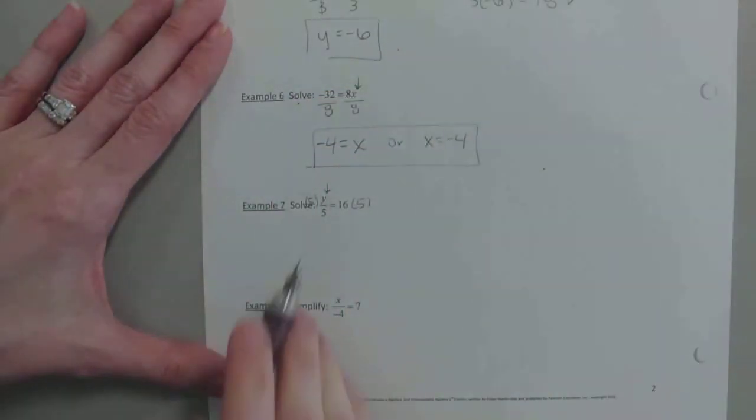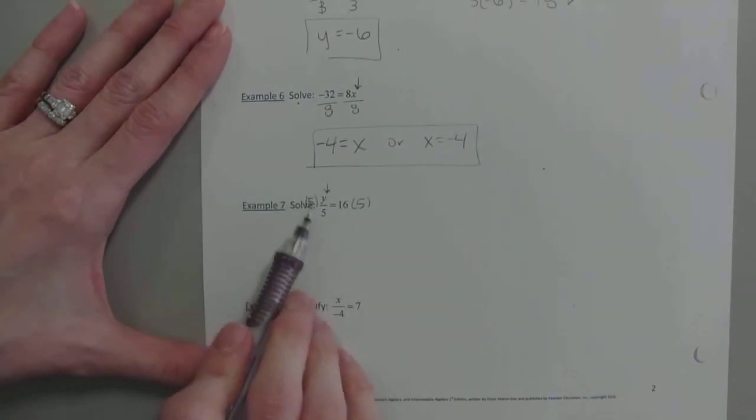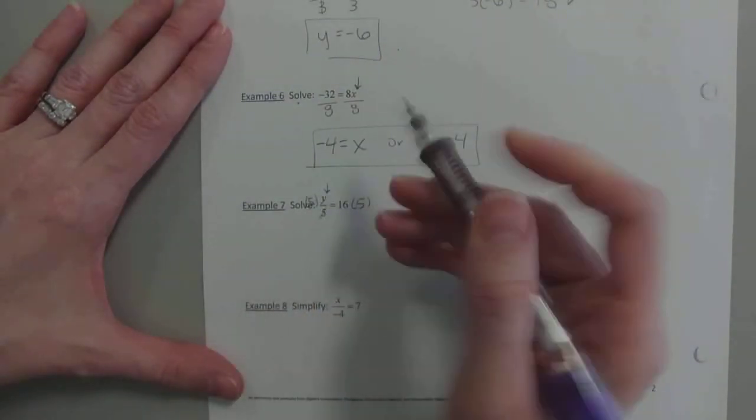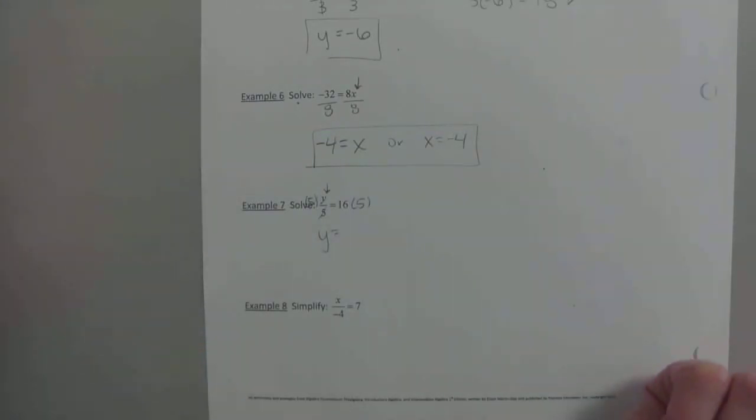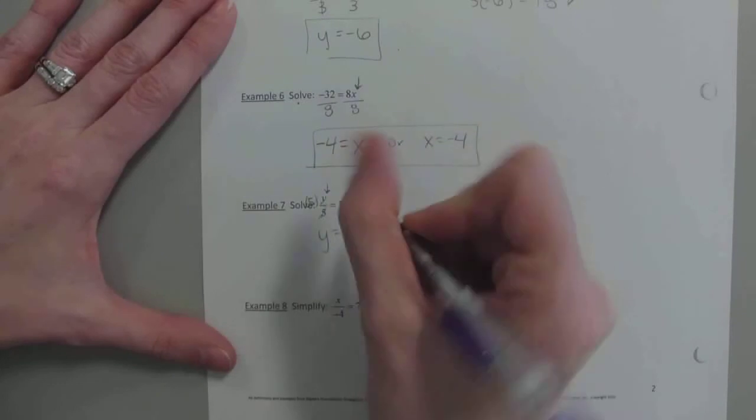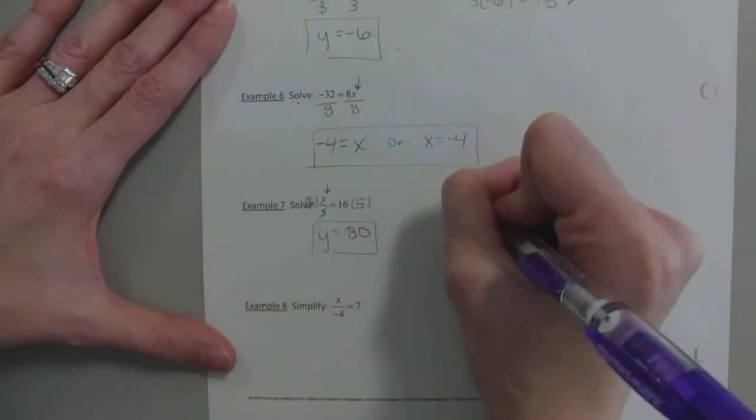So we want to get y by itself. So we're just going to multiply both sides by 5. Why does it work over here? Because technically this is 5 over 5 again, which reduces to 1 and leaves you with y. And then over here, throw 16 times 5 in your calculator. Is that 80? Is that right? Yeah.